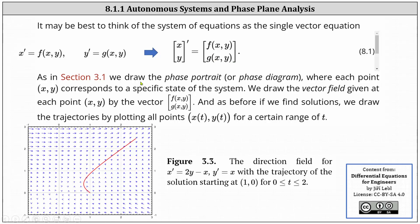As in section 3.1, we draw the phase portrait or phase diagram, where each point (x,y) corresponds to a specific state of the system. We draw the vector field at each point (x,y) by the vector given by f(x,y), g(x,y). And as before, if we find solutions, we draw the trajectories by plotting the points (x(t), y(t)) for a certain range of t.